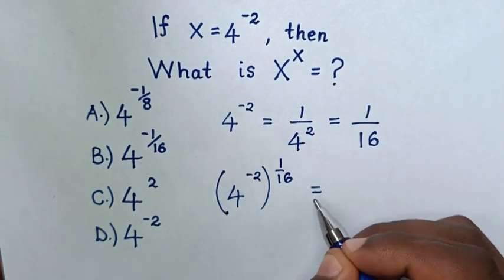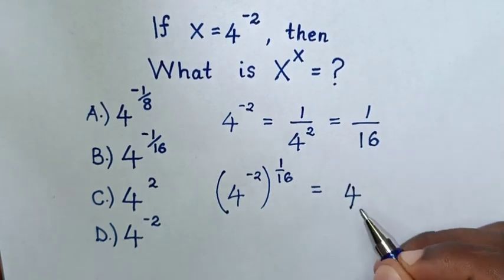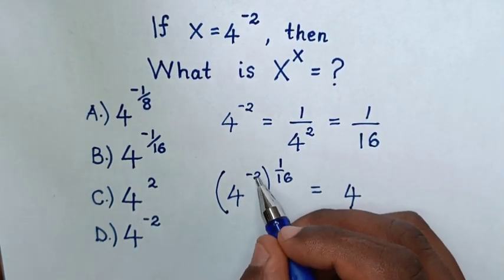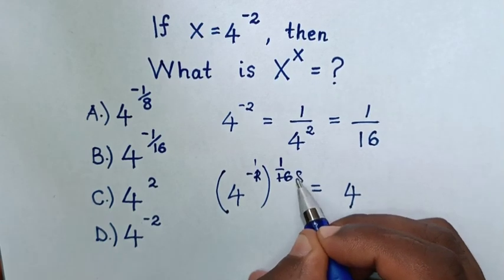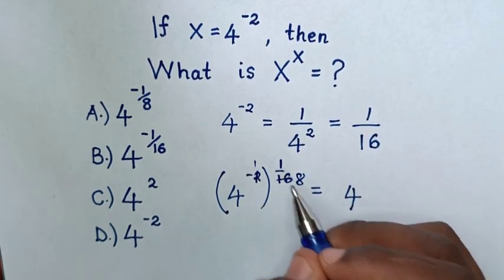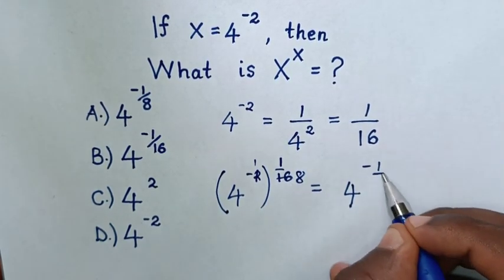Then, this is equal to 4 power of negative 2 to simplify by 1 over 8. So, negative 1 times 1 over 8 is negative 1 over 8.